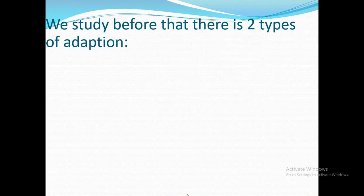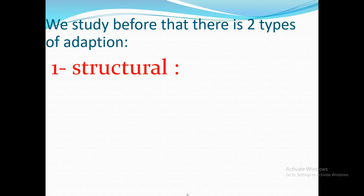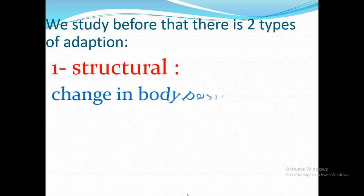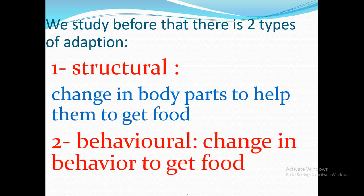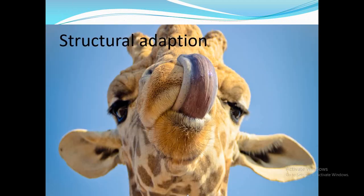We studied before that there are two types of adaptation. The first one is structural, and the second one is behavioral. Structural means a change in body parts to help animals get food. Behavioral means a change in behavior to get food, such as moving from one environment to another, or hunting in groups together.